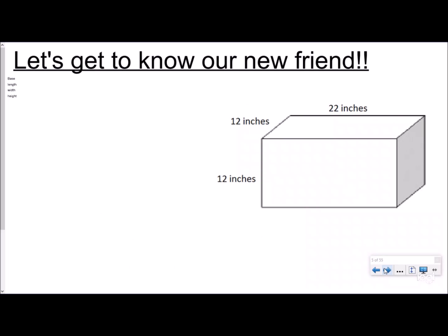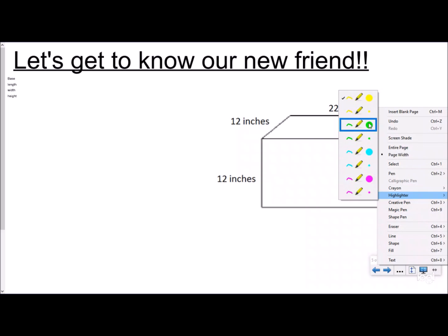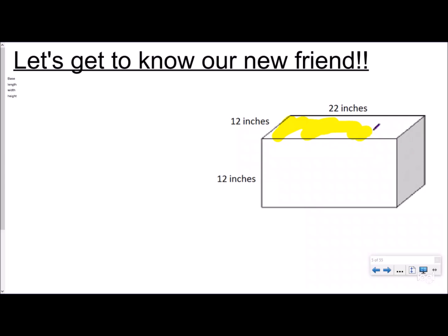Then we get to know the rectangular prism. Students have this picture in their notes and we label the height, the length, and the width. We talk about the area of the base as a term we'll use later. In a rectangular prism, the front and back are the same, the two sides are the same, and the top and bottom are the same — so the area of the base equals the area of the top. You can highlight this to make the connection clear.